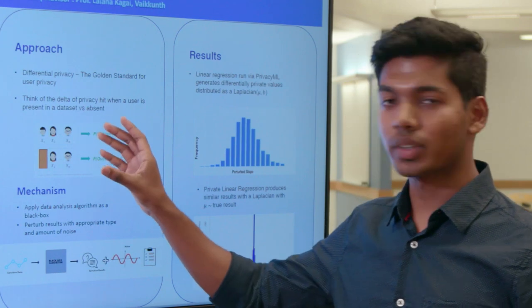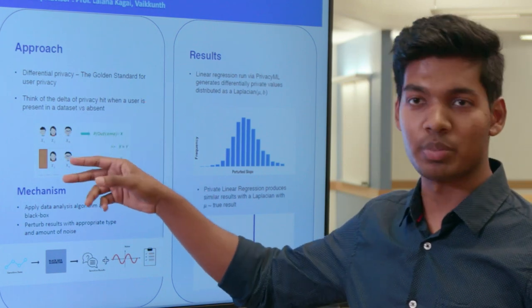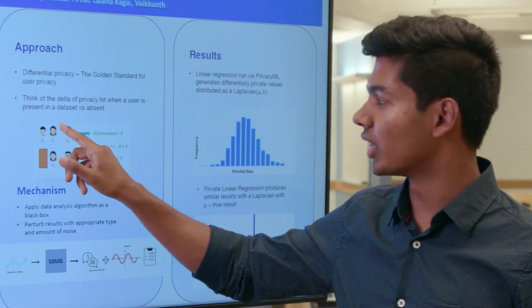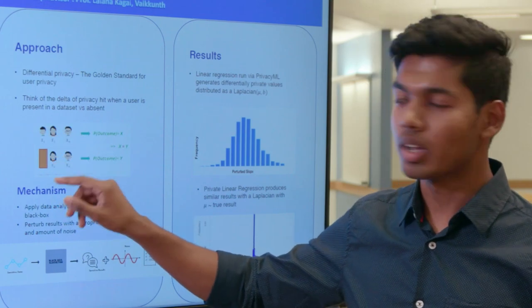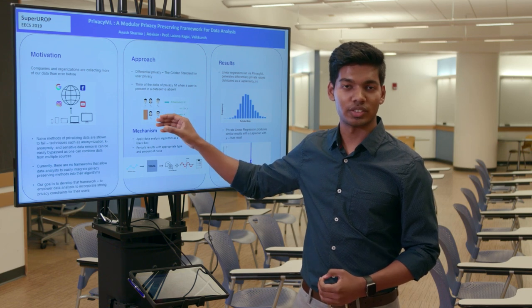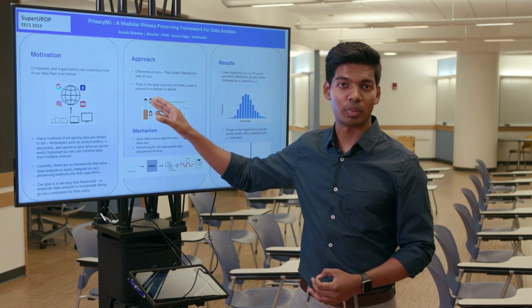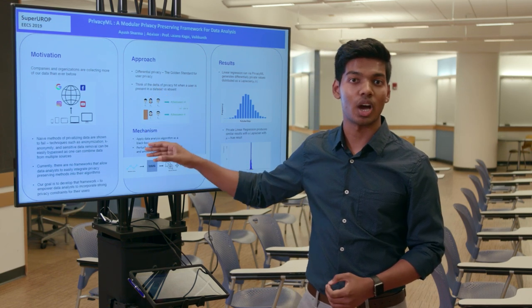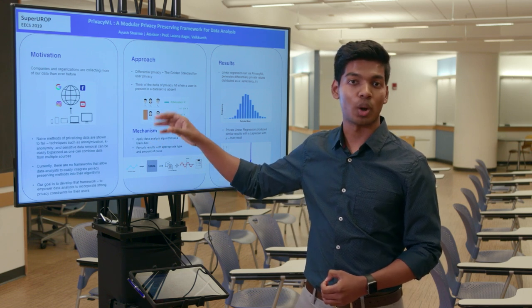Consider two datasets that are neighboring such that there's one user present in the dataset that's not in the other one. The intuitive notion of differential privacy is what's the difference in privacy of this user by being in the dataset versus not being in the dataset, and can you optimize for that.